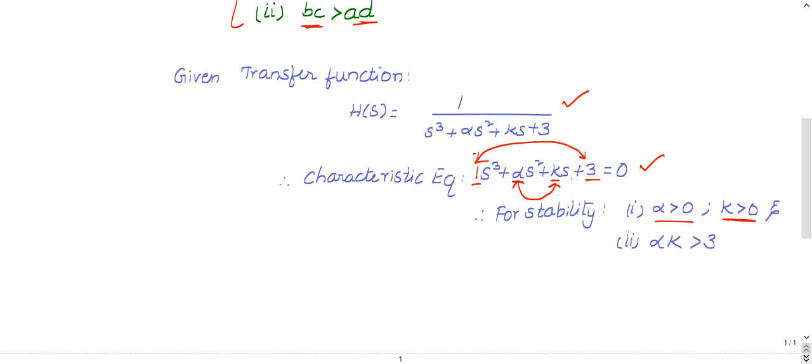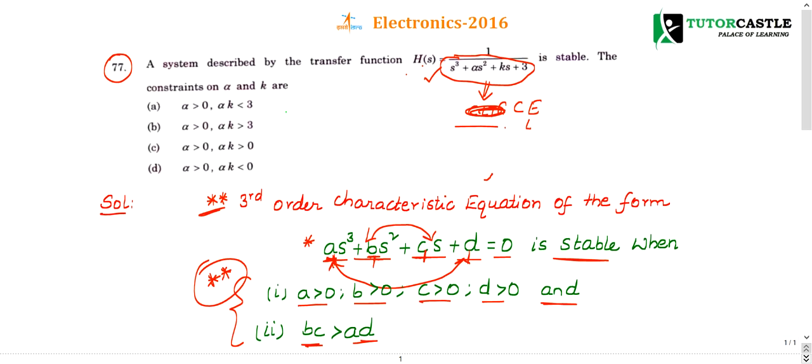So inner product αk must be greater than three. Let's see the options: alpha must be greater than three and αk is less than three—incorrect because αk must be greater than three. Alpha is greater than... αk, this is the right choice.